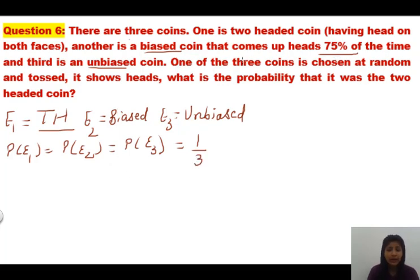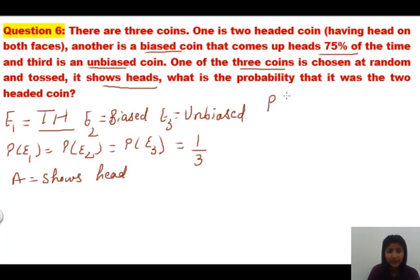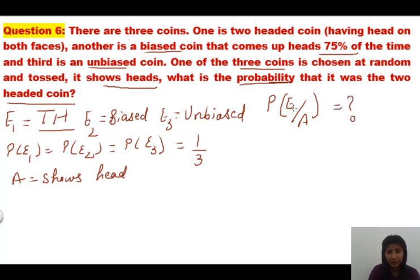Now they are saying one of the 3 coins is chosen at random and it shows head. The common event across all three cases is showing head. So I consider event A as 'shows head.' They are saying head is already shown — this is given. We have to find the probability that it was a two-headed coin. That is P(E1|A) — a reverse or conditional probability.